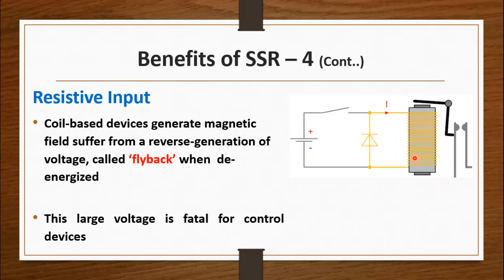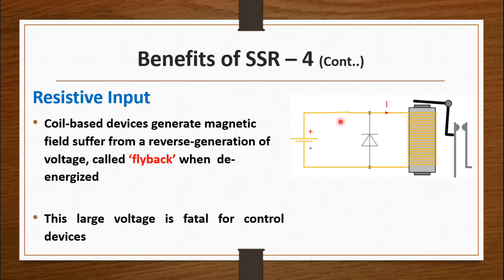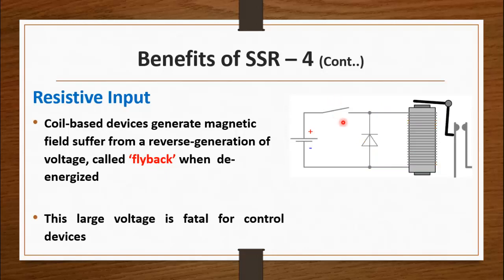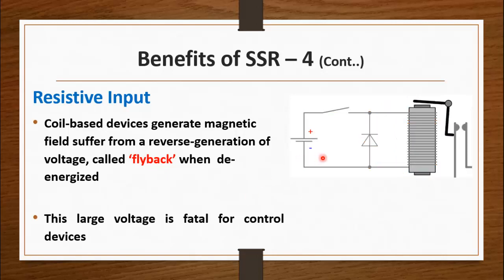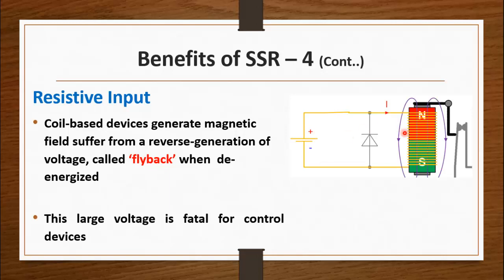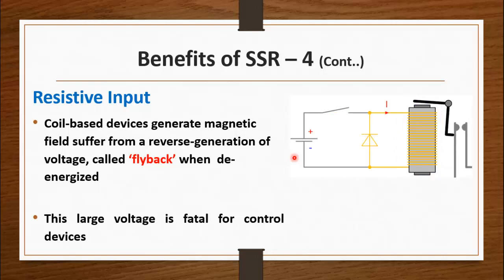A coil is basically an inductor. Whenever you energize the coil it becomes an electromagnet and pulls the contacts together to close the circuit. When you de-energize an inductor, the current across the coil does not come to zero immediately, so it produces a very high voltage across the contacts of that device. To reduce this voltage, a flyback diode must be connected across the coil. In my experience, whenever you control an electromagnetic relay with a microcontroller, this voltage spike can damage or interrupt the input supply, normally causing a reset in the controller. Flyback voltage is basically the biggest disadvantage of electromagnetic relay.